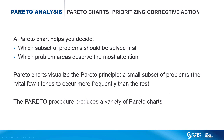After you have investigated problems in a process and determined the causes, how do you prioritize corrective action? The Italian economist Vilfredo Pareto noticed that 80% of the land in Italy was owned by 20% of the population. He was surprised to find that the same ratio held in other countries. It turns out that the Pareto principle, also known as the 80-20 rule, applies to many things. After you have discovered the causes of problems in a process, you can use a Pareto chart to show which causes are most prevalent or most expensive, so you can tackle those first.